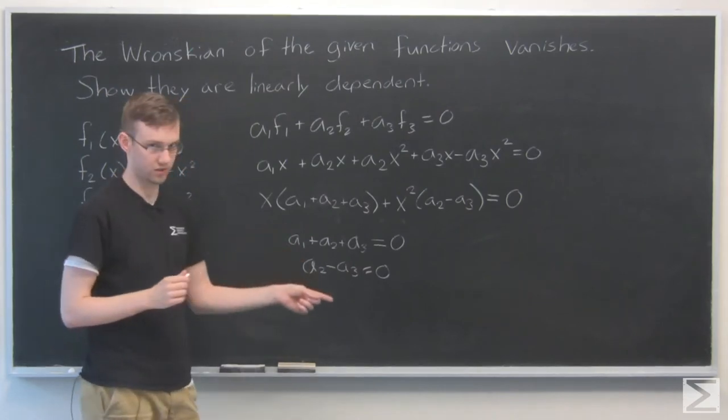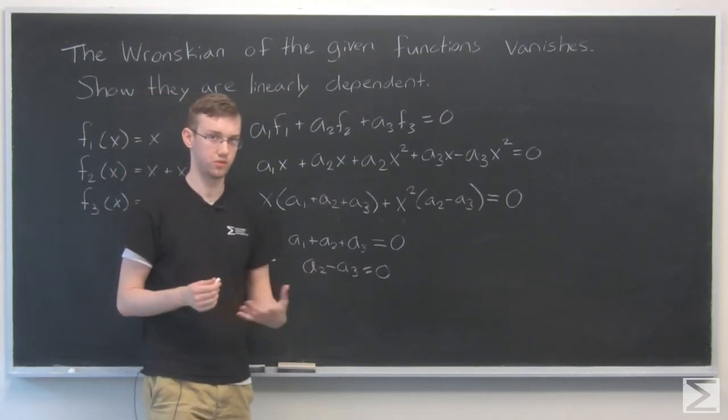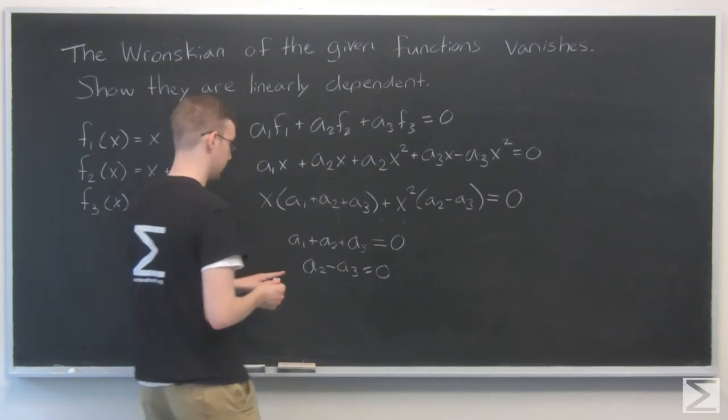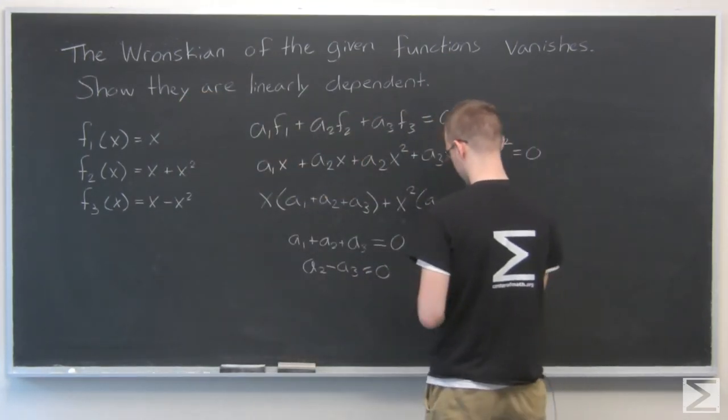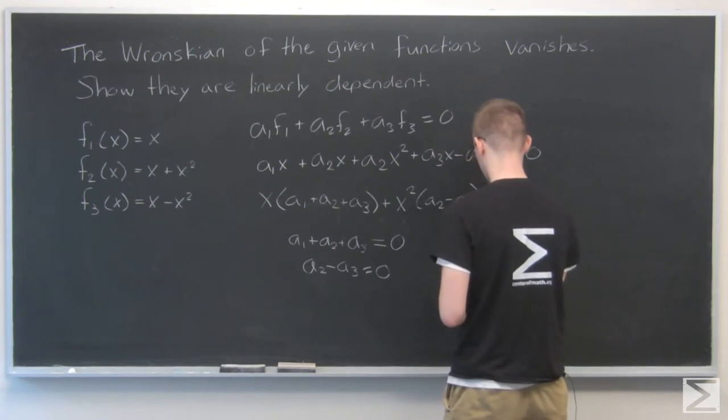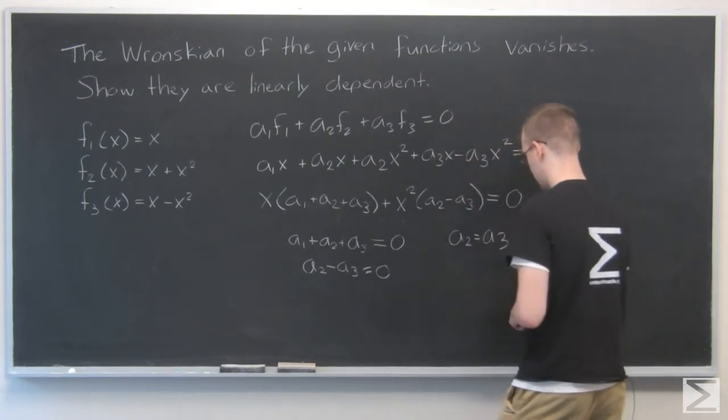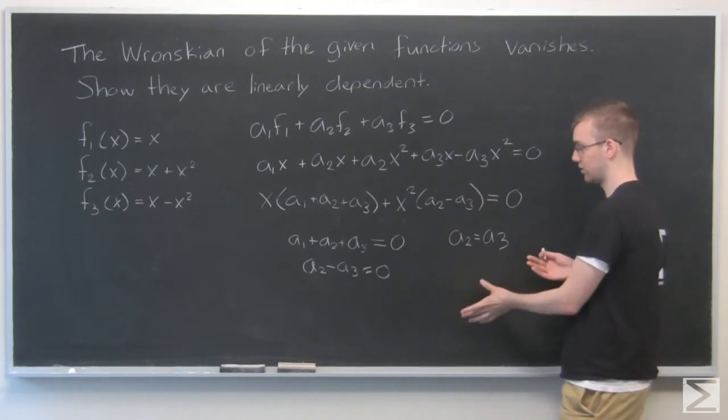I have three unknowns and only two equations, so there's probably going to be an infinite number of solutions. Right away, I can solve the second equation to get a2 = a3. So we know that relation—these two are equal.